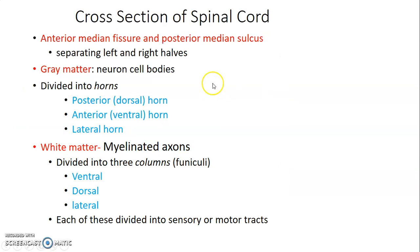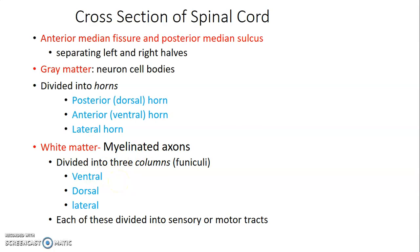The cross-section of the spinal cord shows an anterior median fissure and a posterior median sulcus separating the right and left halves. The inner portion has gray matter — representing a collection of neuronal cell bodies. Gray matter is divided into: posterior horn with sensory nerve nuclei; anterior ventral horn with motor nuclei; and lateral horn at T1 to T12 and upper lumbar L1-L2, containing pre-ganglionic sympathetic fibers. The outer white matter contains myelinated axons divided into ventral, dorsal, and lateral columns carrying ascending (sensory) and descending (motor) tracts.